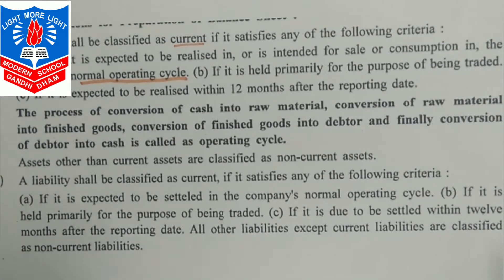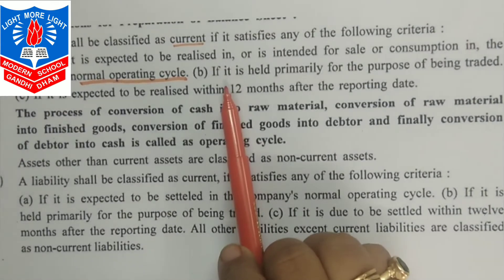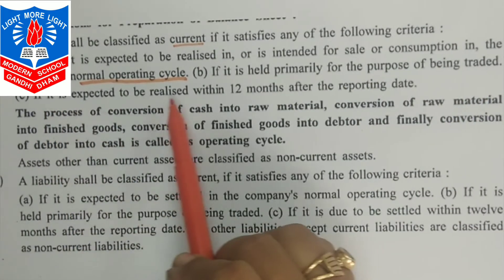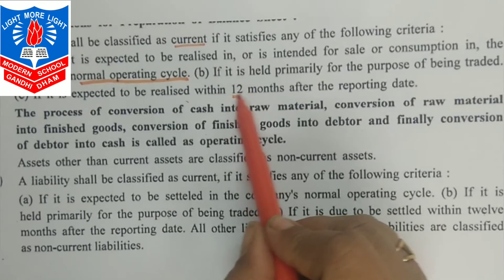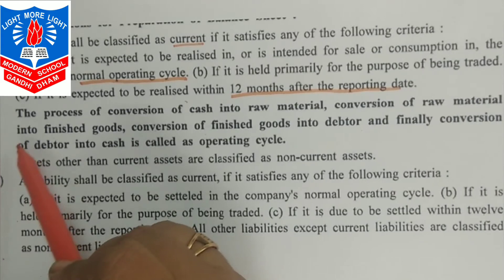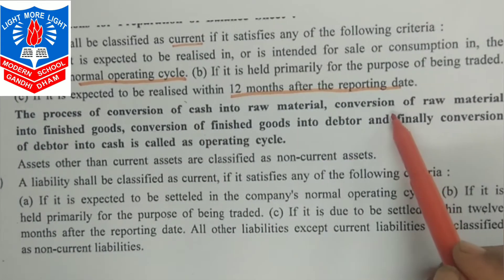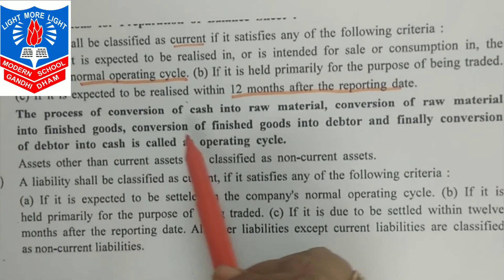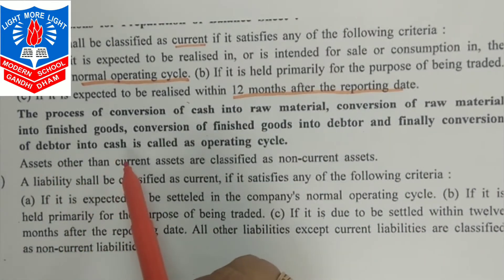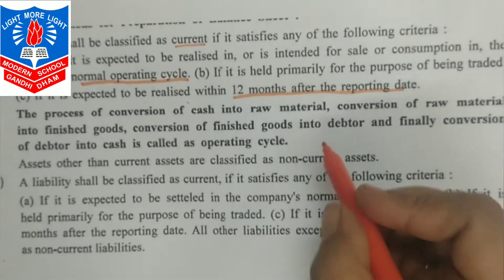If it is expected to be realized within 12 months after the reporting date, then that is known as a current asset. The process goes: conversion of cash into raw material, raw material into finished goods, finished goods into debtors, and finally debtors back into cash — that is known as the operating cycle.